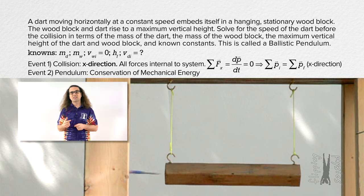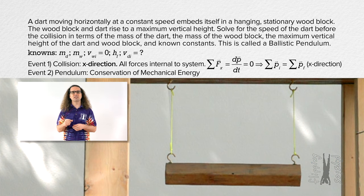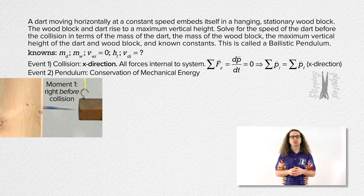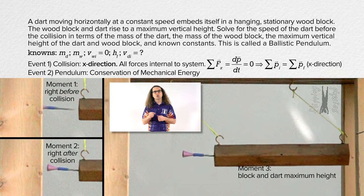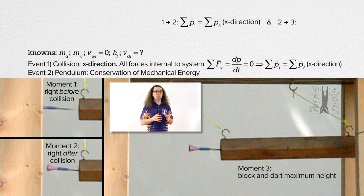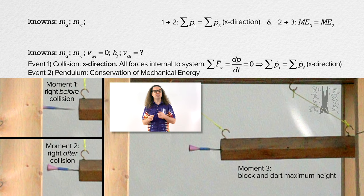Rather than looking at this as initial and final in parts one and two, we identify three different moments. Moment one is right before the collision. Moment two is right after the collision. Moment three is when the dart and wood block are at their maximum height. From moment one to moment two, linear momentum in the x-direction is conserved. From moment two to moment three, mechanical energy is conserved. This means we update our known values with subscripts: velocity of the wood block at moment one equals zero; height at moment three is our maximum height; and velocity of the dart at moment one is what we're solving for.